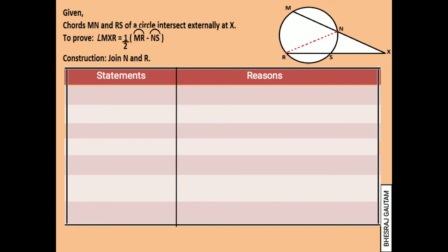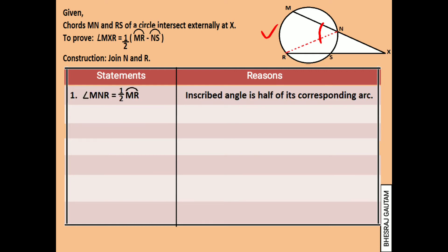First of all, we can write angle MNR is equal to half of arc MR, as the relevant relation is: inscribed angle is equal to half of the arc that forms the angle.